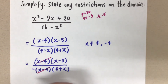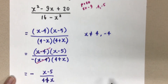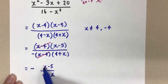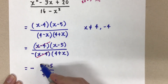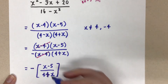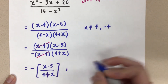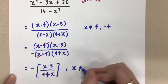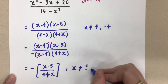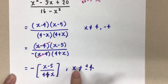Now I see (x minus 4) in the numerator and (x minus 4) in the denominator — I can divide those out, since they make a 1 and multiplying by 1 doesn't change anything. I pull the negative out to the front, leaving (x minus 5) in the numerator and (4 plus x) in the denominator. You can distribute that negative to the numerator or leave it out front — all forms are equivalent. And because that's my final answer, I restate the restrictions: x cannot be equal to positive or negative 4. That is the final simplified answer, with restrictions written.